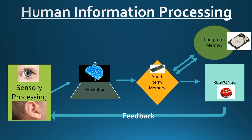Human information processing is a very complex task. It involves sensory processing, and the brain takes in the information and it becomes perception. With the interplay of short-term memory and long-term memory, the user gives a response.